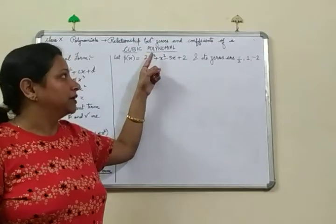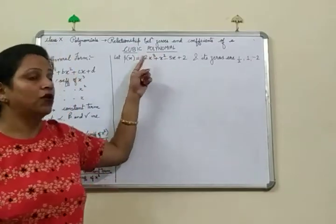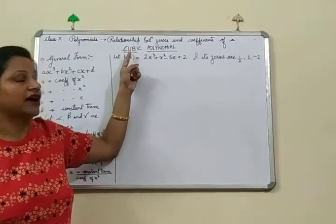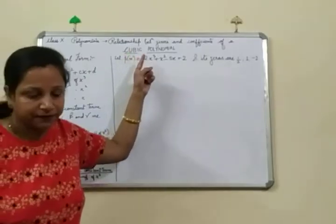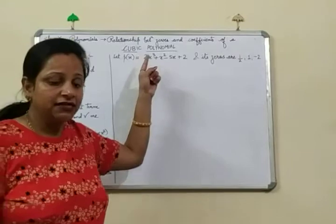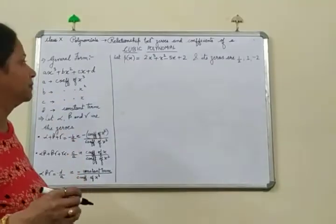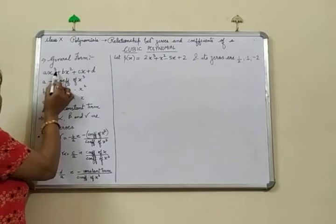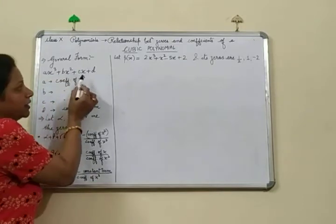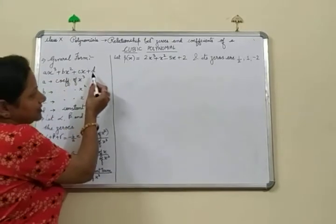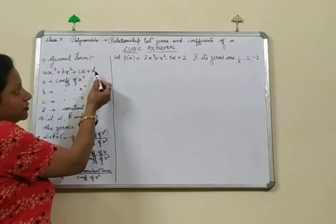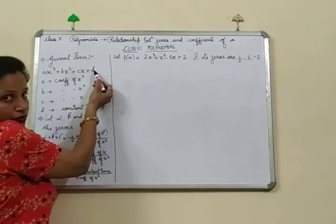A cubic polynomial, as you all are aware, is a polynomial which has the highest degree as 3. The general form of a cubic polynomial is ax³ plus bx² plus cx plus d.